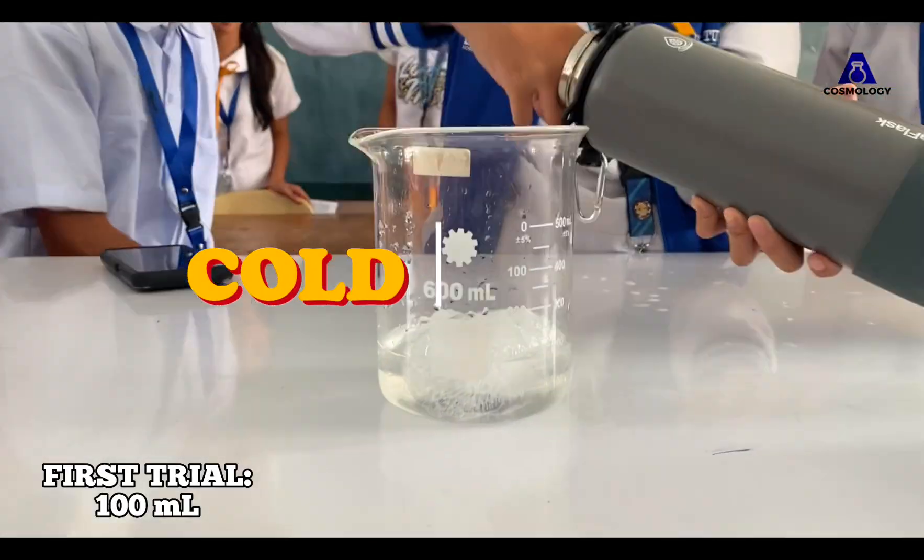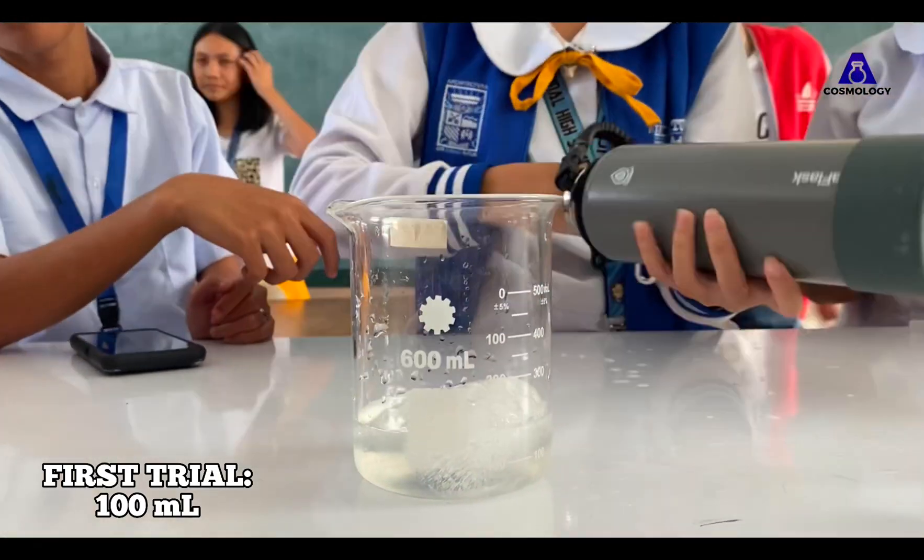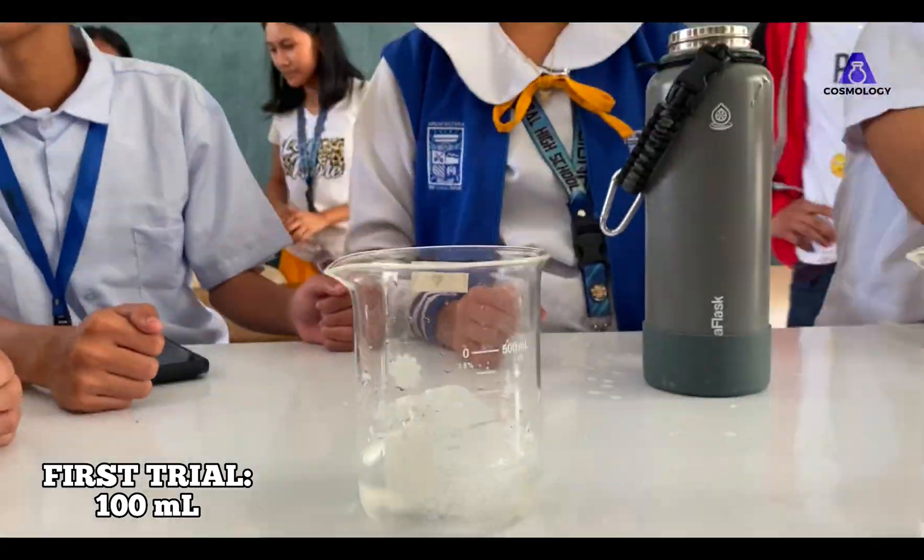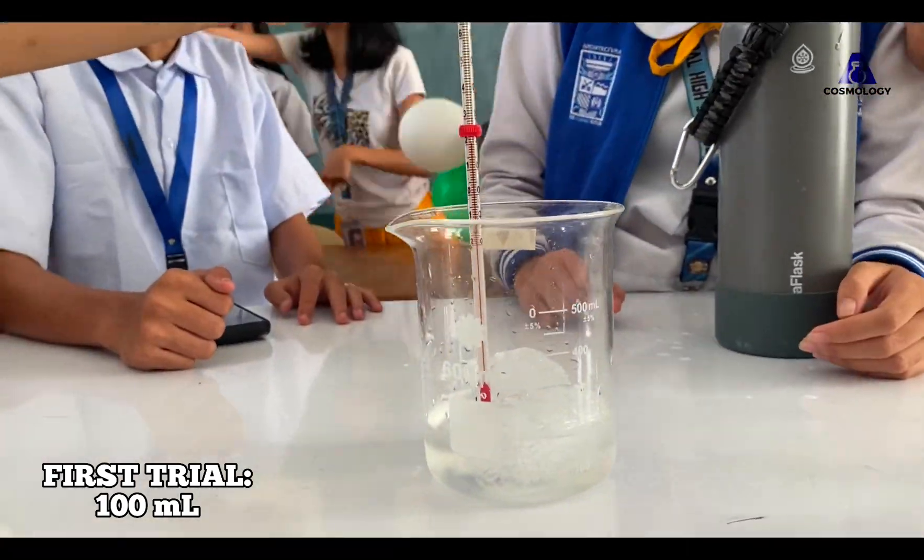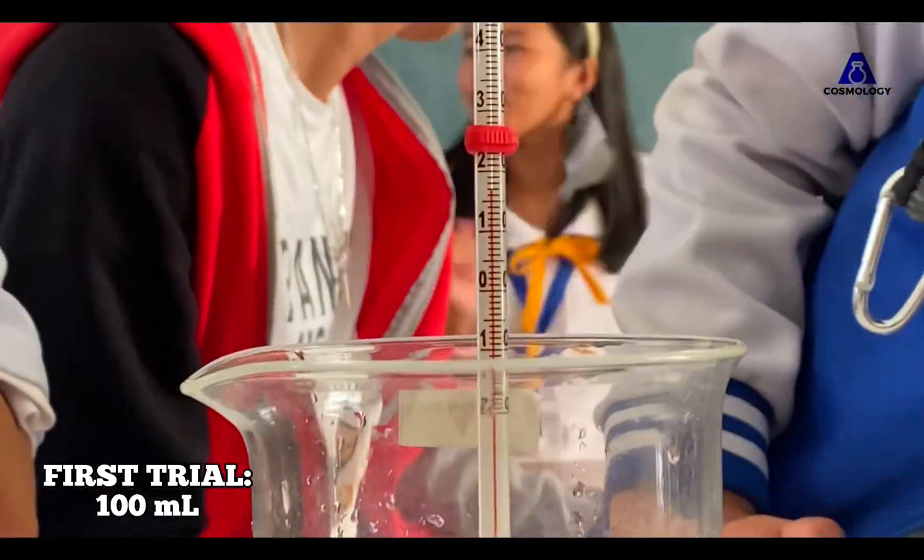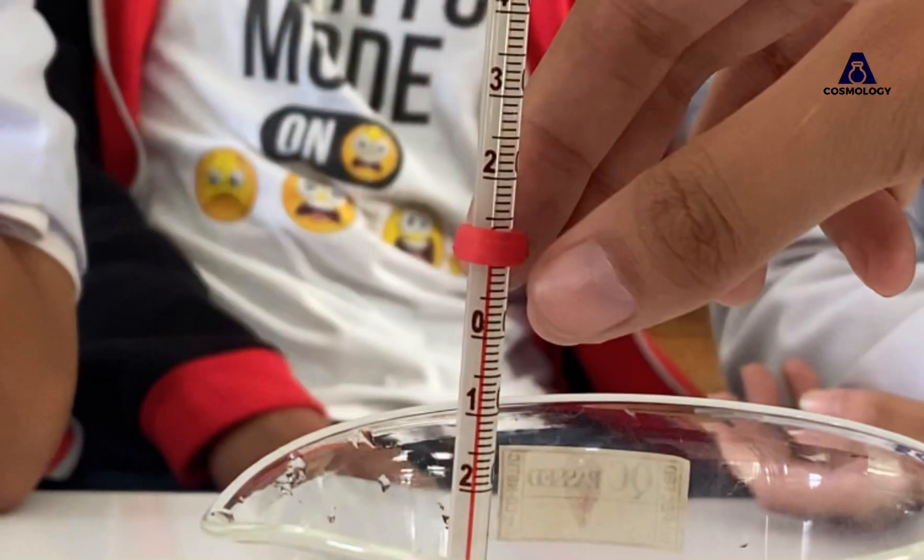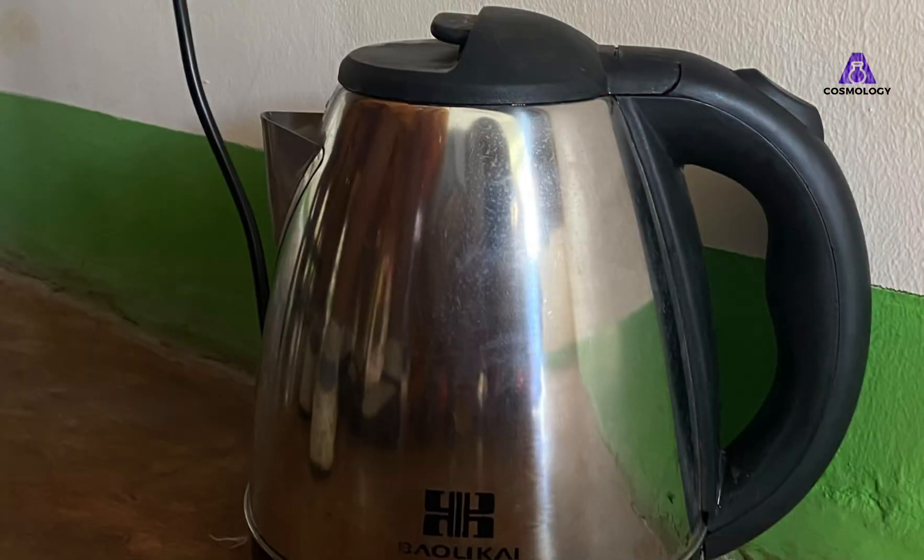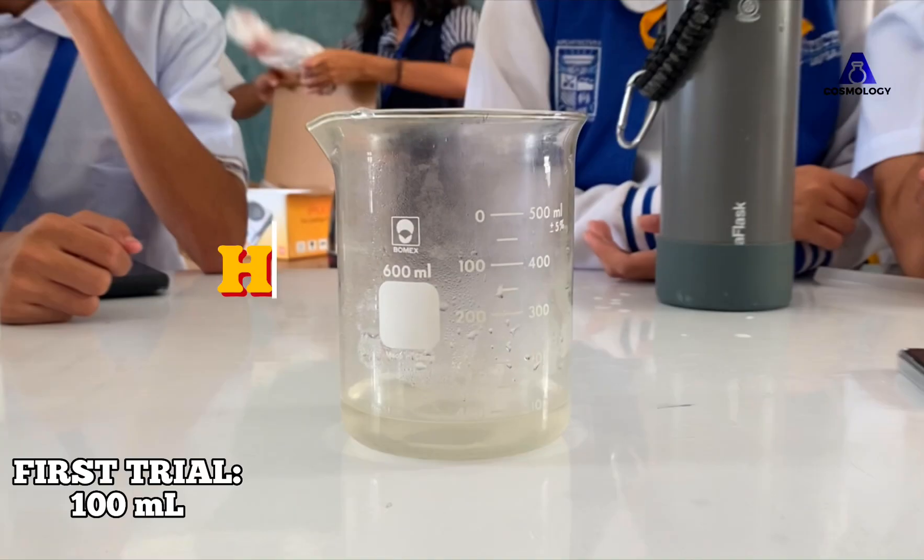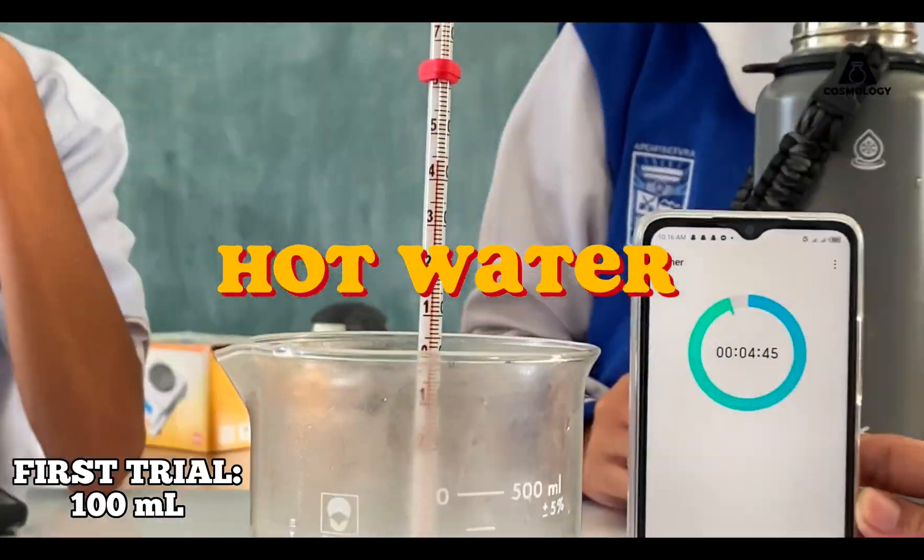Fill the beaker with the crushed ice up to the water level. After five minutes, measure the temperature of the air just above the water level. Heat the water until it boils and get the temperature of the air just above the water level.